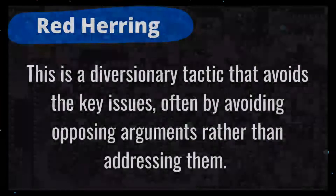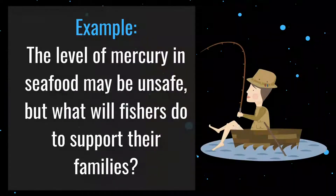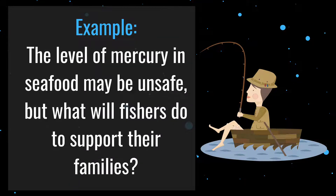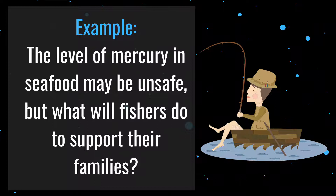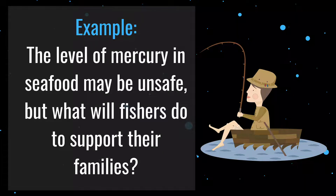Number 10 is red herring. This is a diversionary tactic that avoids the key issues, often by avoiding opposing arguments rather than addressing them. For example: the level of mercury in seafood may be unsafe, but what will fishers do to support their families? In this example, the author switches the discussion away from the safety of the food and talks instead about an economic issue — the livelihood of those catching fish. While one issue may affect the other, it does not mean we should ignore possible safety issues because of possible economic consequences to a few individuals.